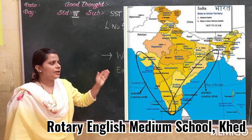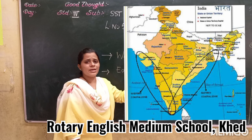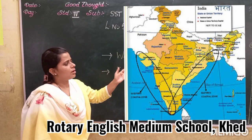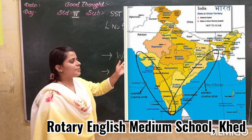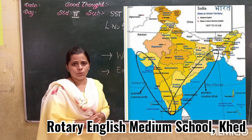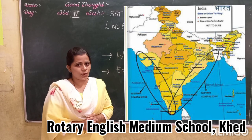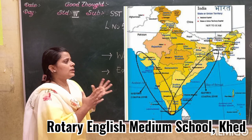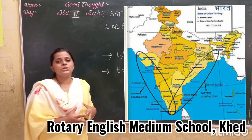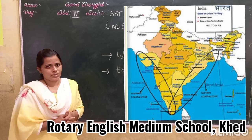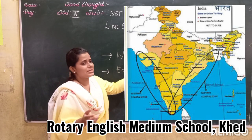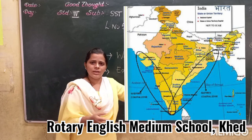The eastern coastal plain includes the states of West Bengal, Odisha, Andhra Pradesh, Puducherry, and Tamil Nadu. The average width of this plain is 120 km, making it wider than the western coastal plain.